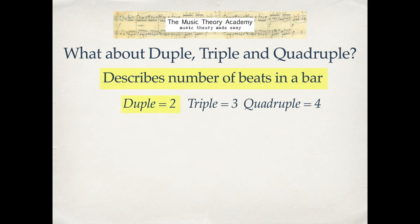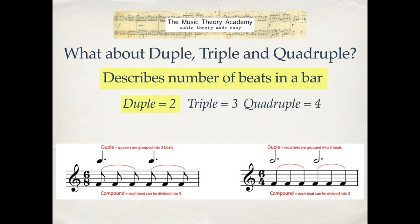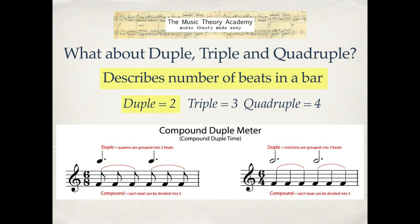So we would describe those as simple quadruple meter or simple quadruple time. Now let's look at compound examples. Here we are in six-eight — compound because each of the dotted crotchet beats can be divided into three. We're counting one-two-three, two-two-three, so it's compound duple. Here's another example with six crotchet beats grouped into two, also compound because each beat divides into three. Any time signature with six as the top number is compound duple meter.